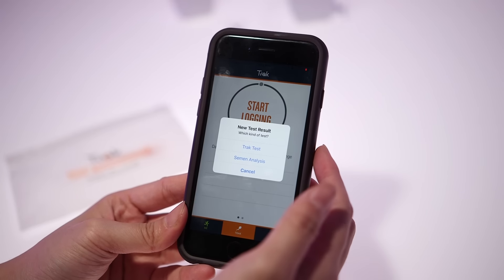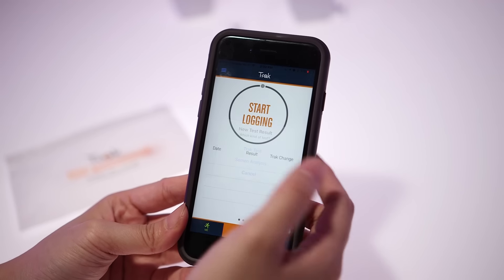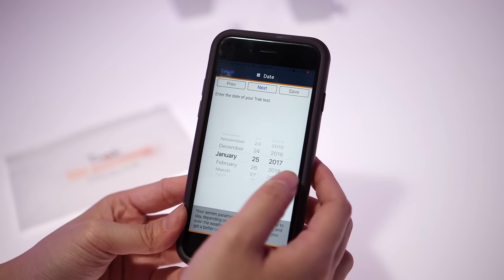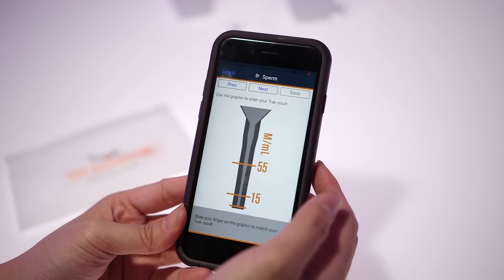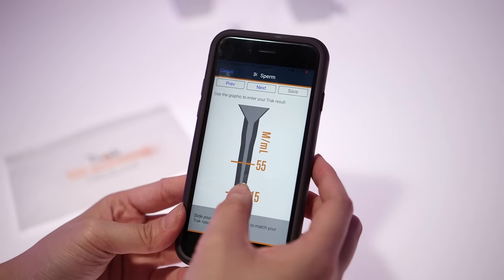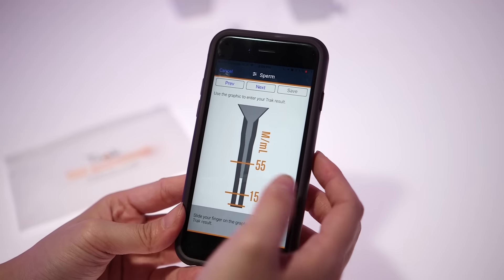Here's why the range I mentioned earlier is important. Instead of simply telling you whether or not your production is adequate, TRACK tells you where you stand on a scale of low, moderate, or optimal based on guidelines from the World Health Organization.